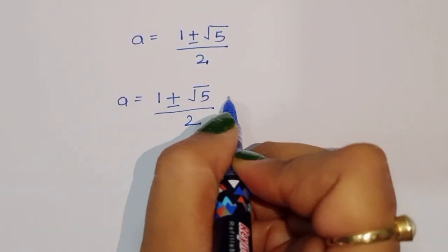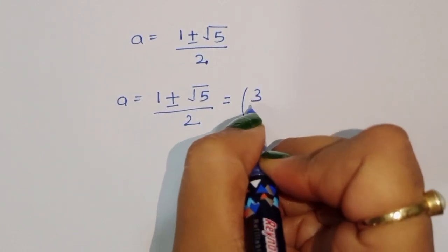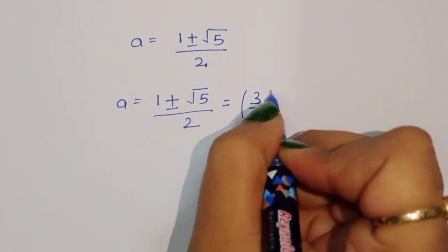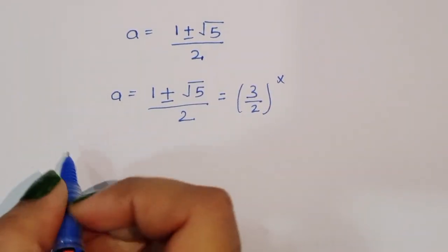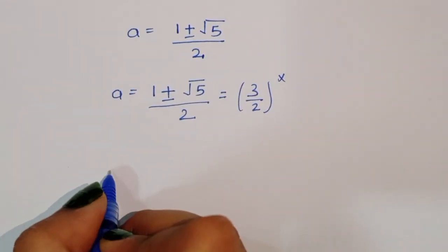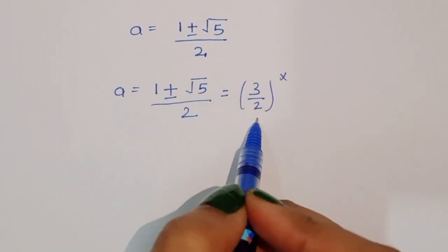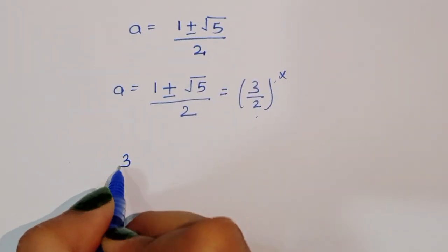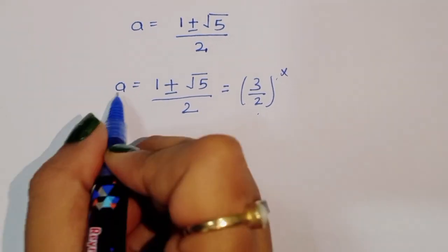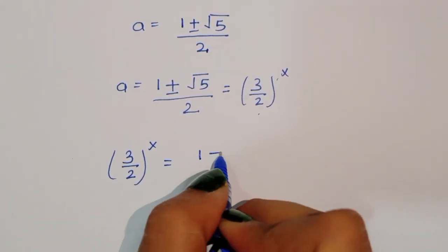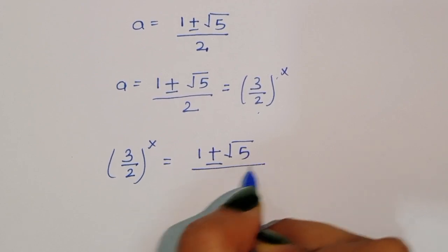But we already set a = (3/2)^x, so when comparing, we can say (3/2)^x = (1 + √5) / 2, taking the positive root since (3/2)^x must be positive.